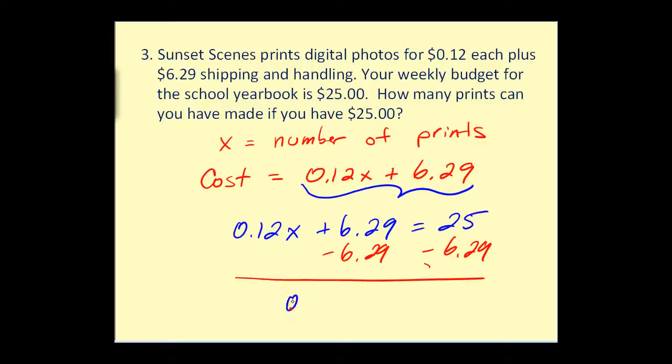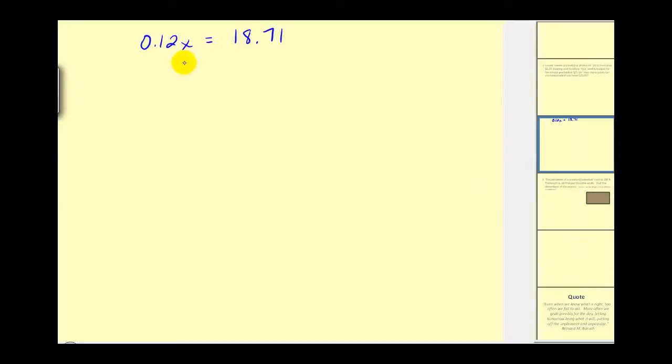This would give us 0.12x is equal to 18.71. Again, you can check this on the graphing calculator if you wish. Let's take this over to the next screen. So we have 0.12x equals 18.71. To solve for x here, we have to divide. So we'll divide by 0.12 on both sides.